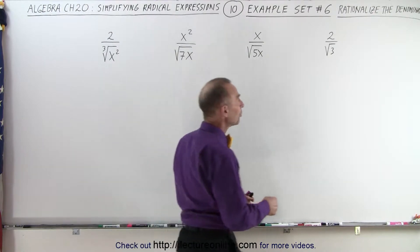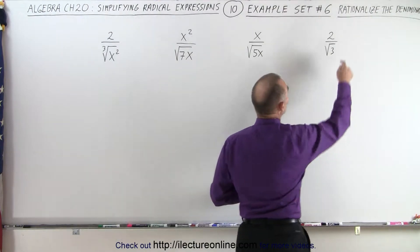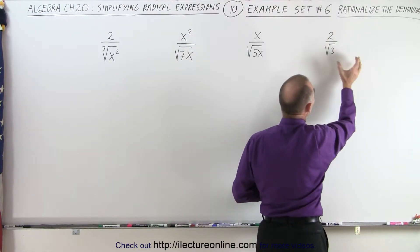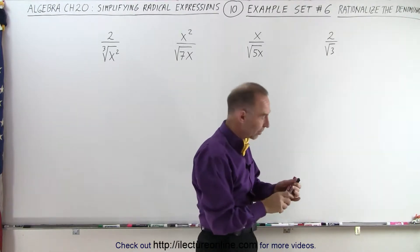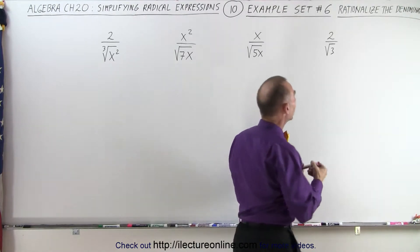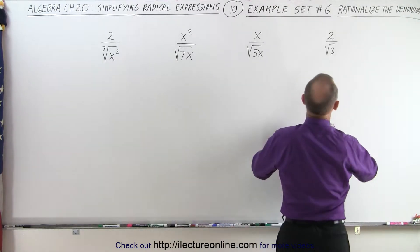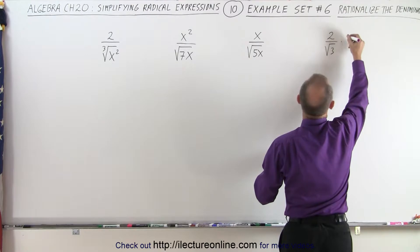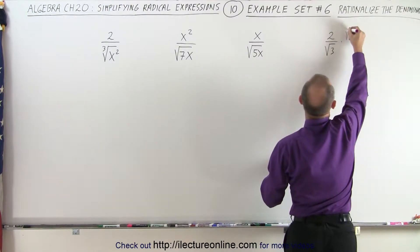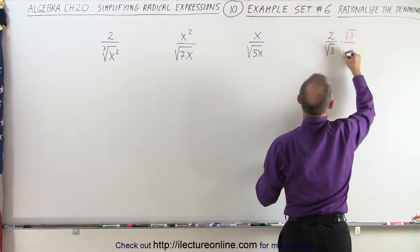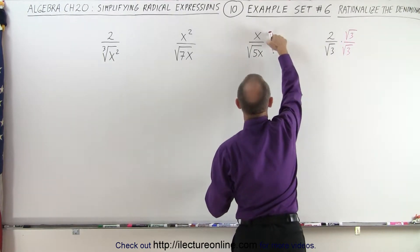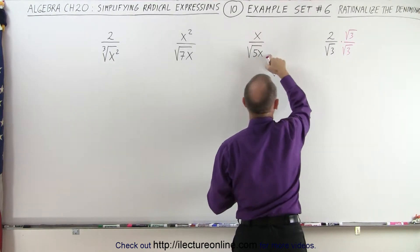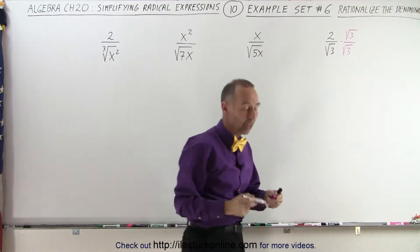In other words, we're going to multiply the numerator and the denominator by something so we can get rid of the radical in the denominator. Typically, whatever appears in the denominator, we're going to multiply both the numerator and the denominator by that very same thing.